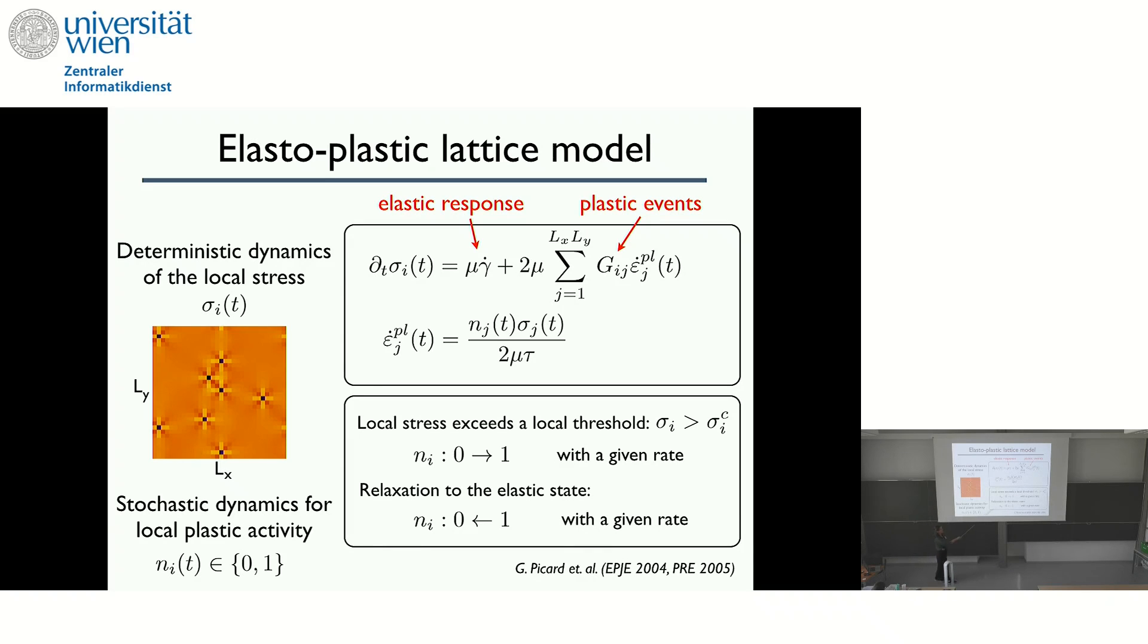And I need then to define the stochastic dynamics for the rules of yielding. So when the local stress exceeds the local yield threshold, the site can become plastic with a given rate. And the relaxation back to the elastic state, which is also, for example, in this model, the Picard model, given by a certain rate. These rules are not universal, there are different models in the literature. For the sake of this talk, I will only stick to the very simple model, which is the Picard model, where these are typical times and the yield stress, local yield stress, is not distributed. It's constant.